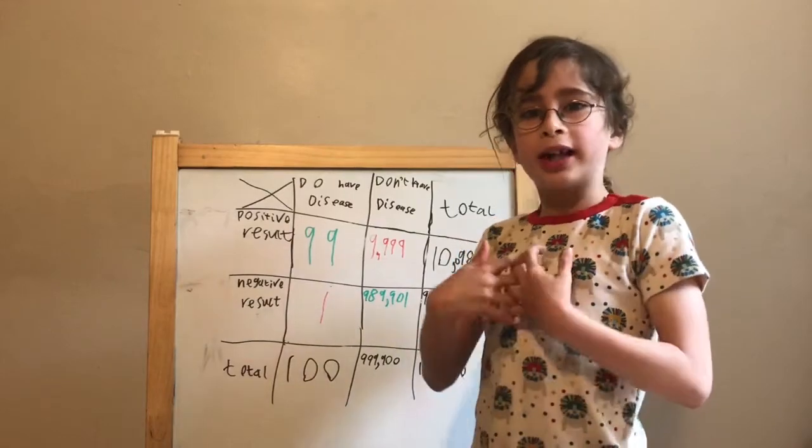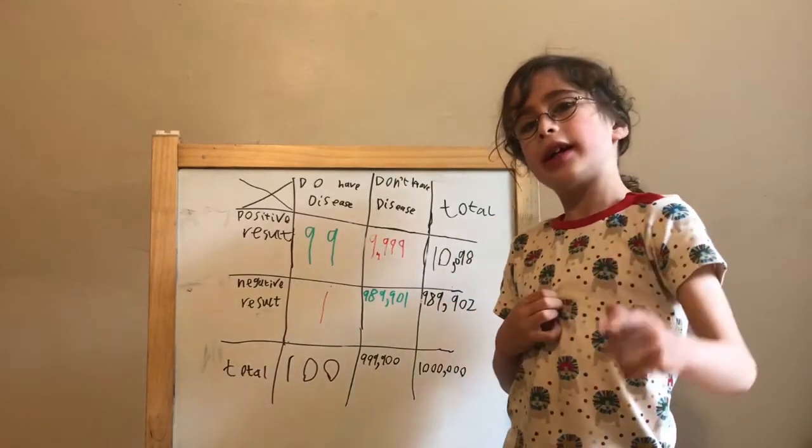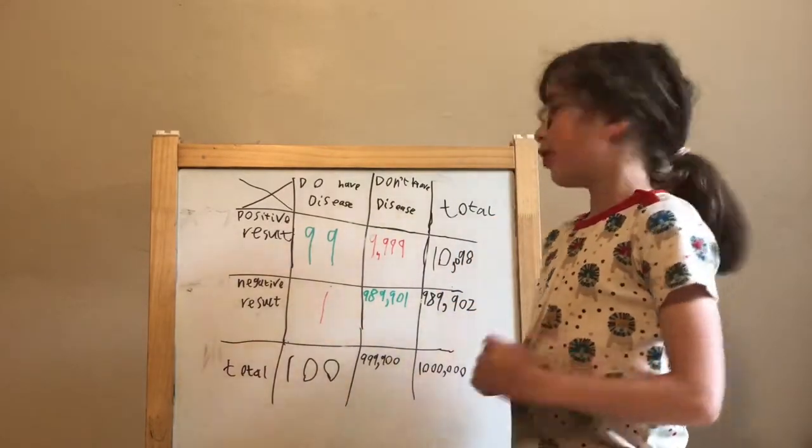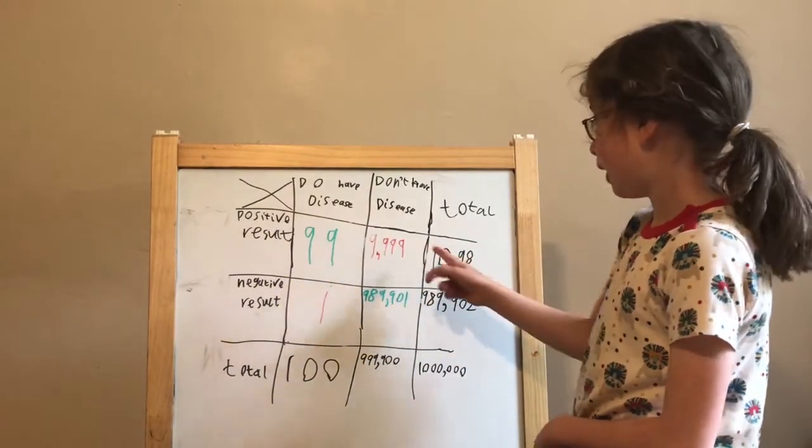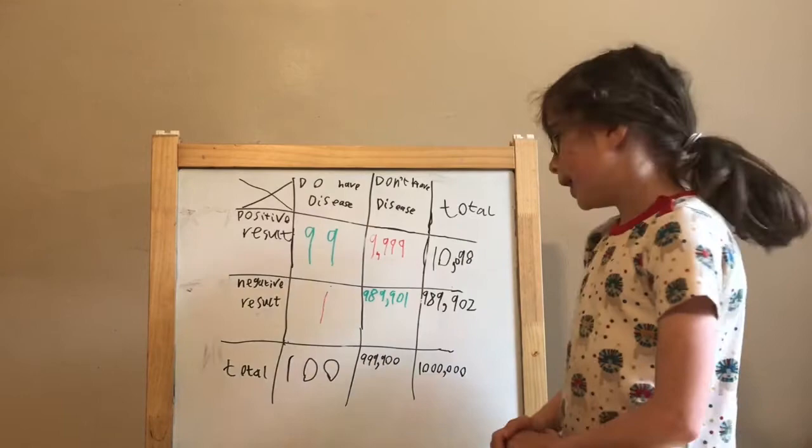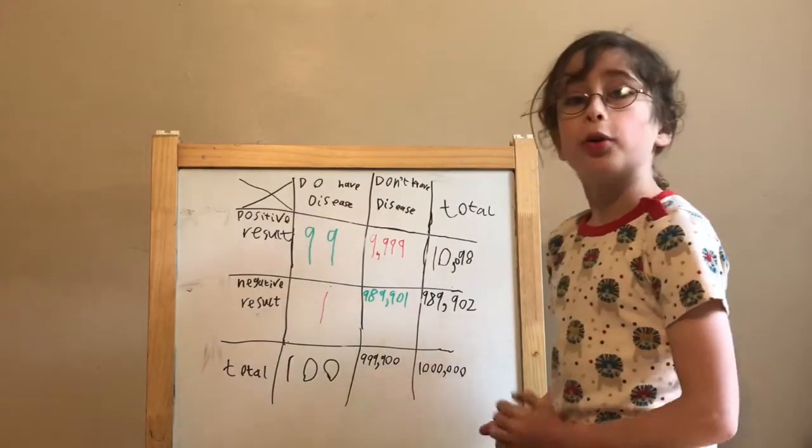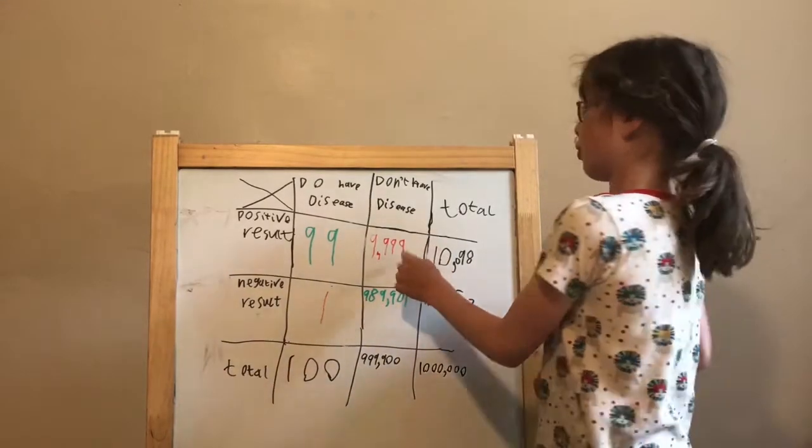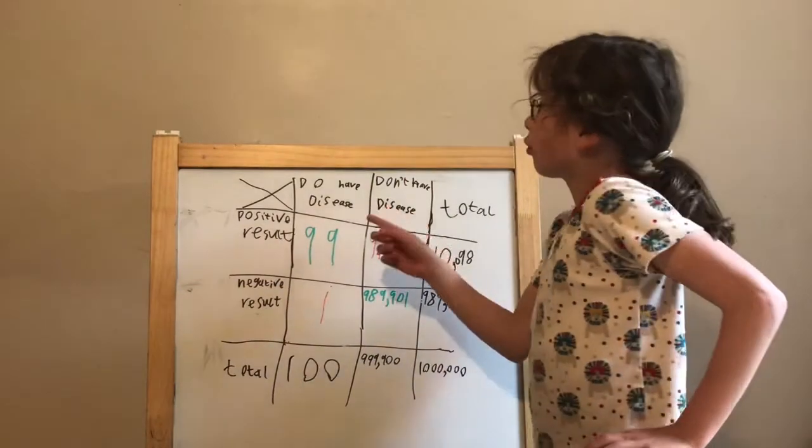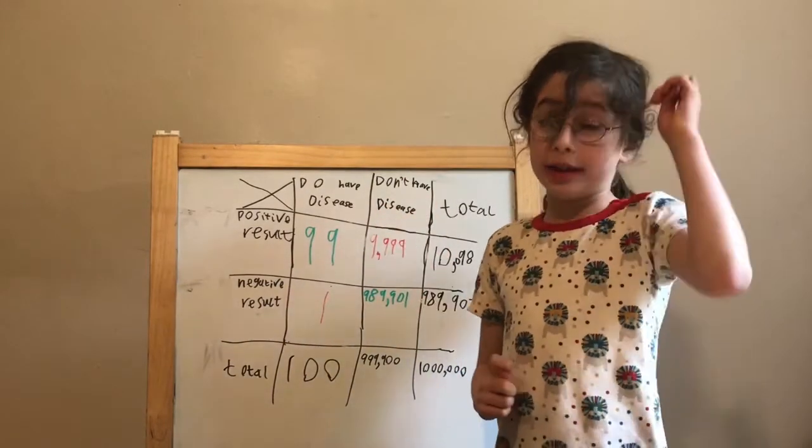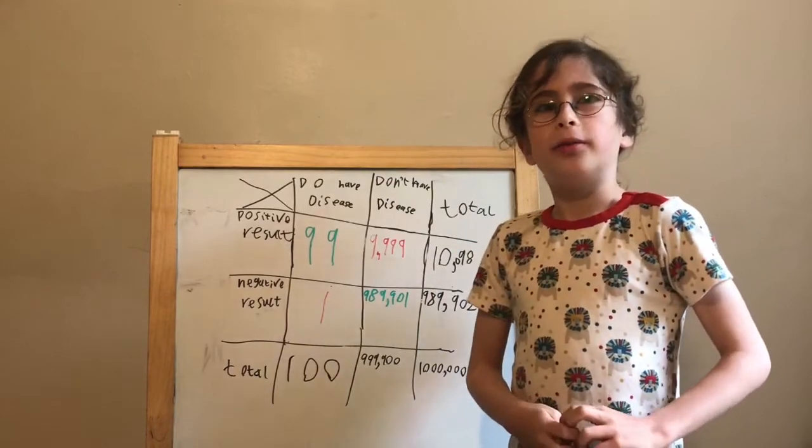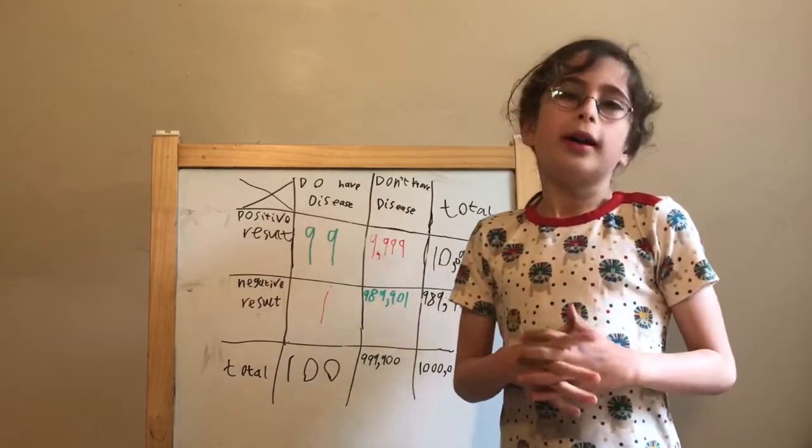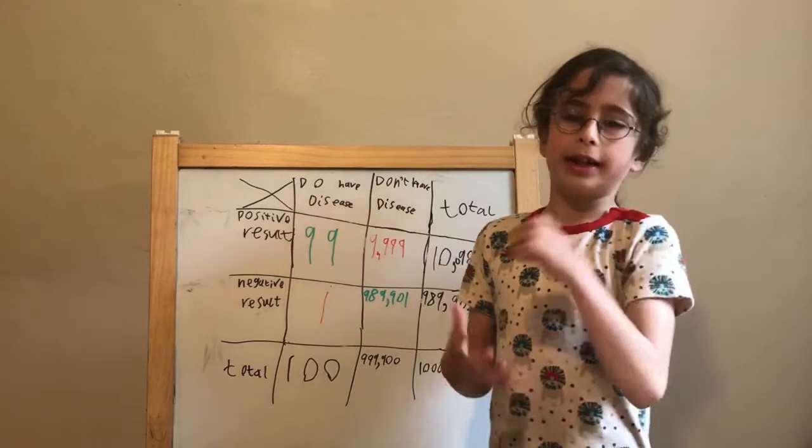So the question we asked in the first place was, how likely are you to have the disease? Now if you're in this group, it'll be 99 out of 10,098, but it's actually much more likely for you to be in this group. So the chances of being in the group who do have it and they know that they do have it is 1 in 102, or like I said, 0.98%.